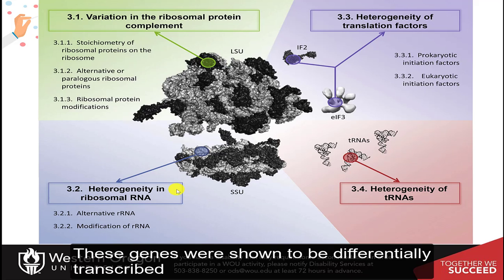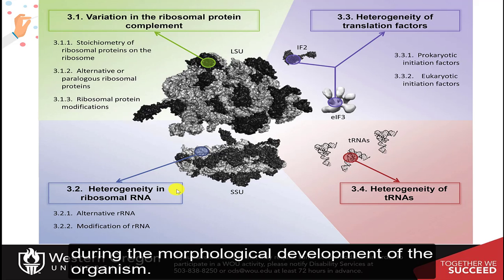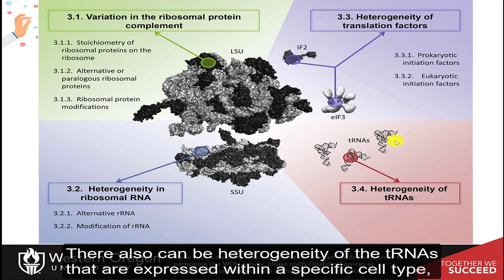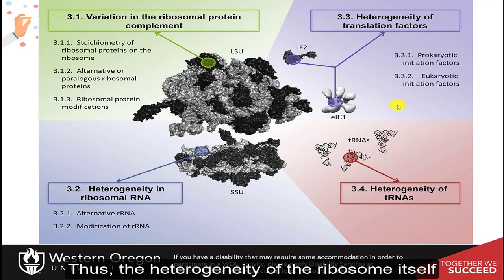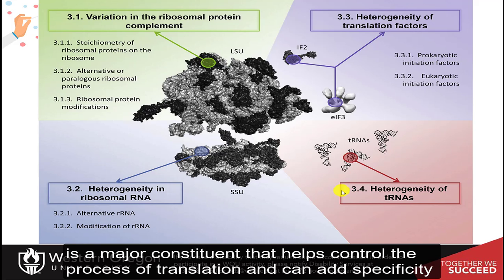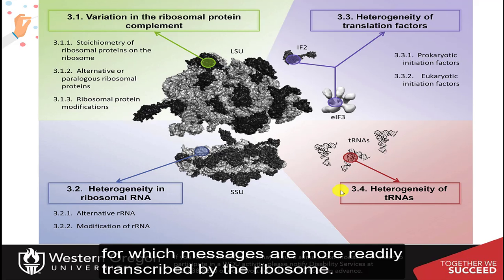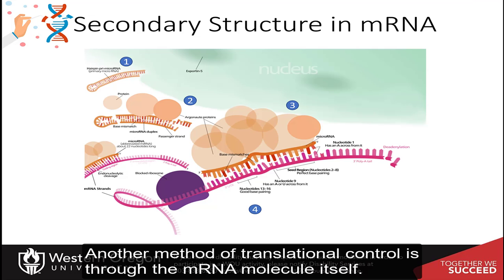These genes were shown to be differentially transcribed during the morphological development of the organism. There also can be heterogeneity of the transfer RNAs that are expressed within a specific cell type or during exposure to specific environmental conditions or developmental stages. Thus, the heterogeneity of the ribosome itself is a major constituent that helps control the process of translation.